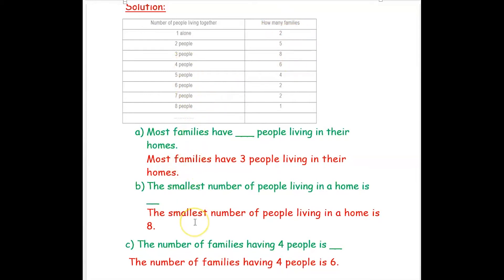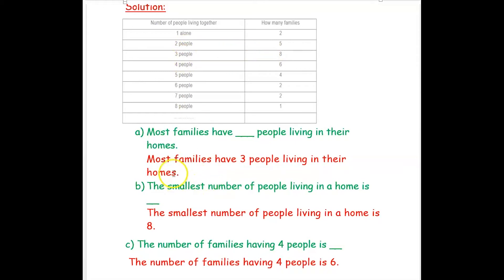Now based on this smart chart we are going to answer the questions. Most families have how many people living in their homes? Most means many, so we have to see the large number in the families column. The large number in that column is eight, and against this eight the number of people living together is three. So most families have three people living in their homes.